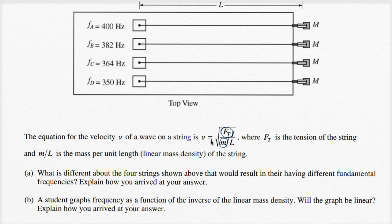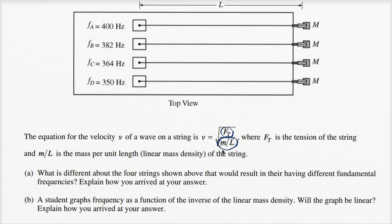It also makes sense that a larger mass per unit length gives a slower velocity. Mass is a measure of inertia — how hard it is to accelerate something. If there's a lot of mass per unit length, it's harder to accelerate the string back and forth as it vibrates. So linear mass density is inversely related to velocity, though not proportionally — there's a square root. If tension increases, velocity increases; if linear mass density increases, velocity decreases.